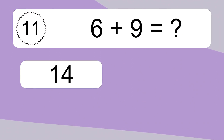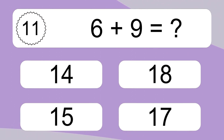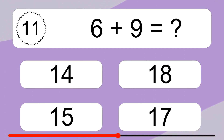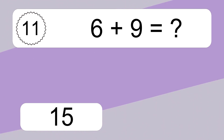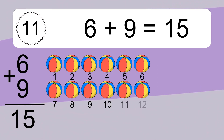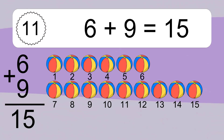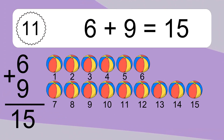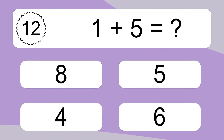6 plus 9 equals what? 6 plus 9 equals 15. Let's count it. 1, 2, 3, 4, 5, 6, 7, 8, 9, 10, 11, 12, 13, 14, 15.